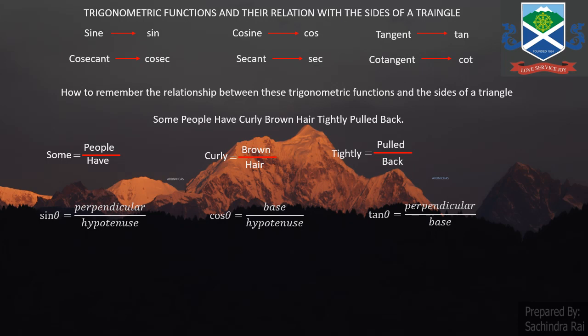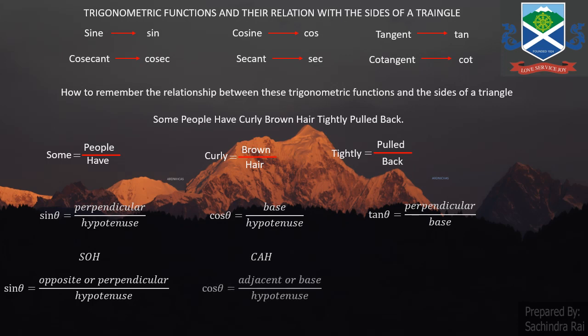To summarize: sine theta equals perpendicular by hypotenuse, cos theta equals base by hypotenuse, tan theta equals perpendicular by base. Or you can use SOH-CAH-TOA: SOH means sine theta equals opposite by hypotenuse, CAH means cos theta equals adjacent by hypotenuse, and TOA means tan theta equals opposite by adjacent. Either of these we will be using to learn more about the trigonometric functions and the sides of a triangle.